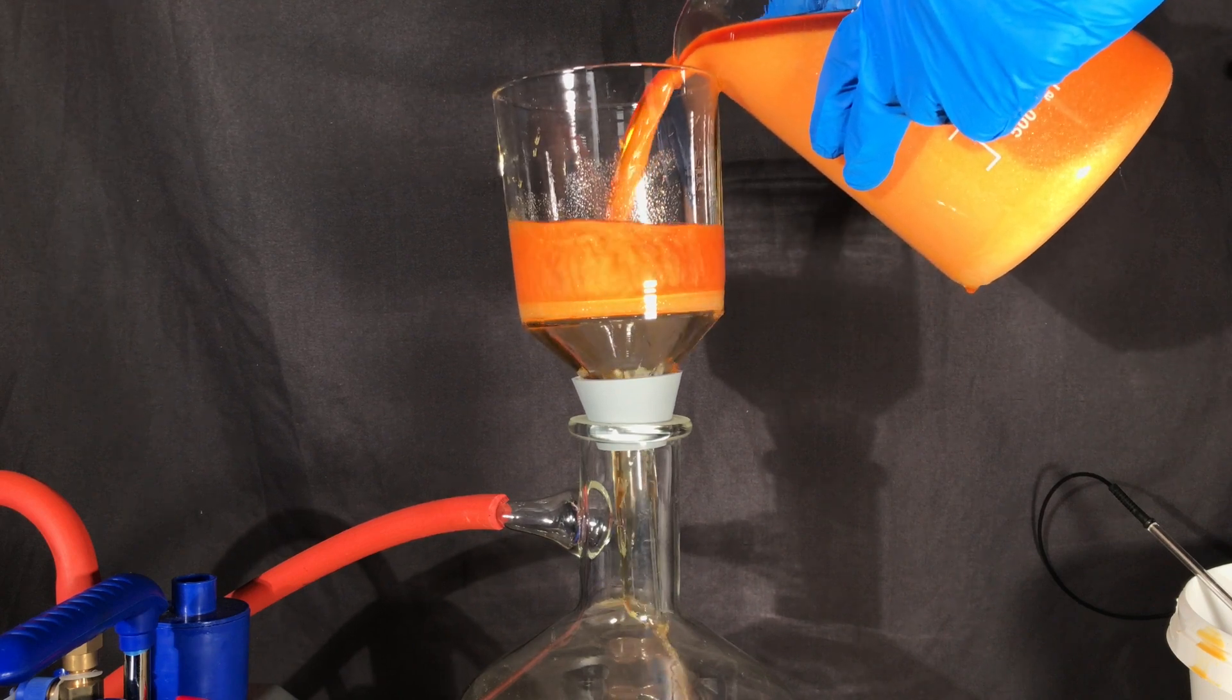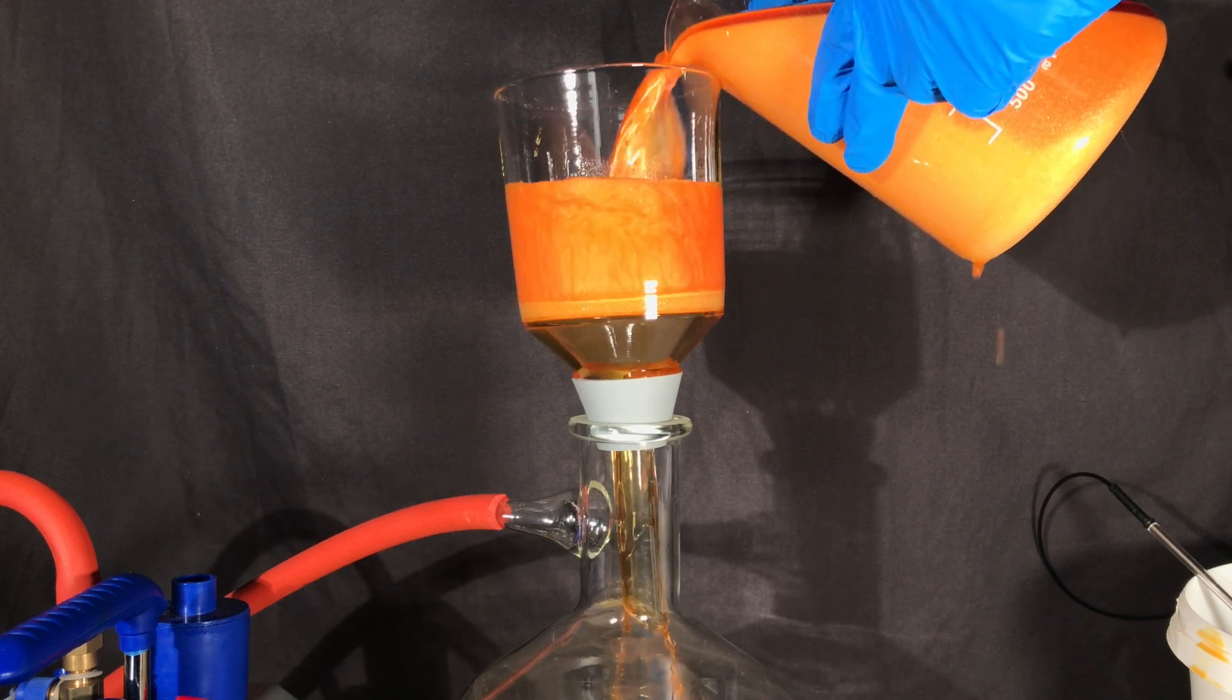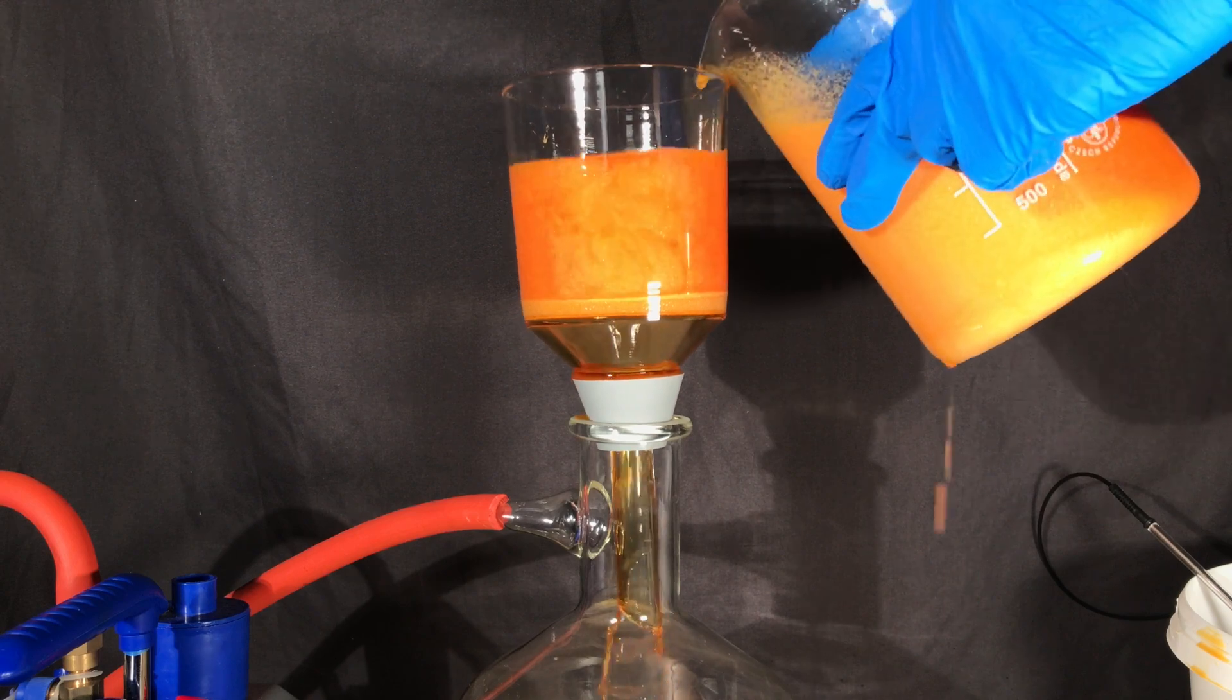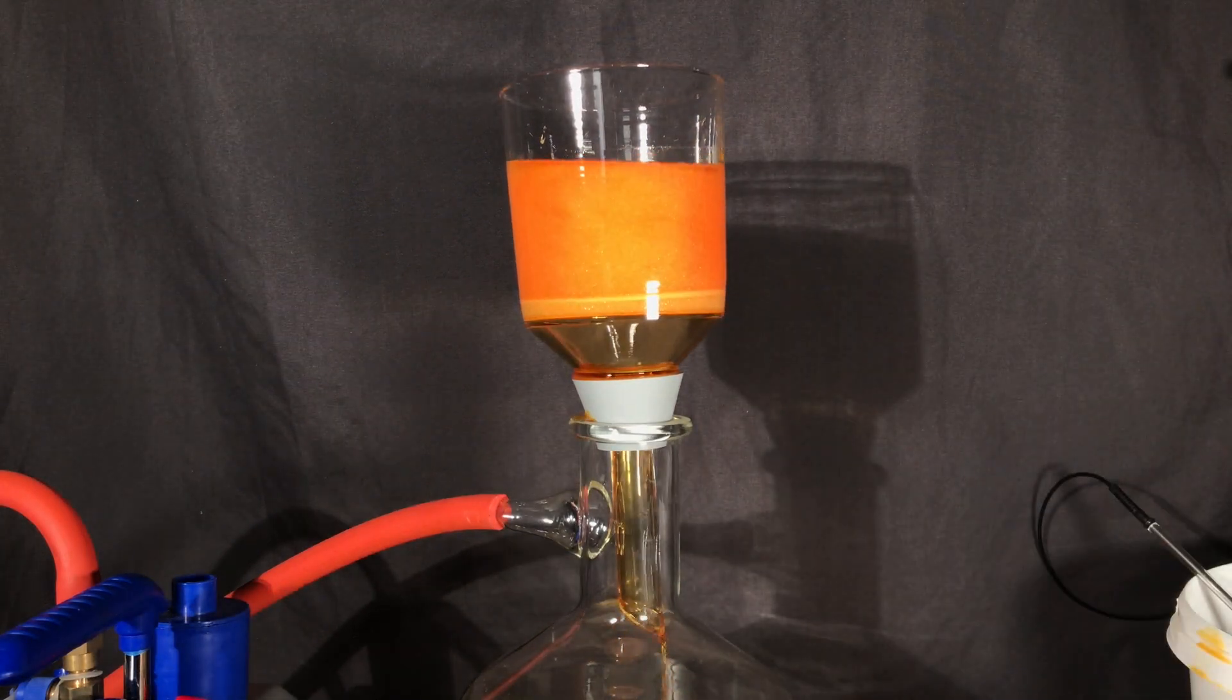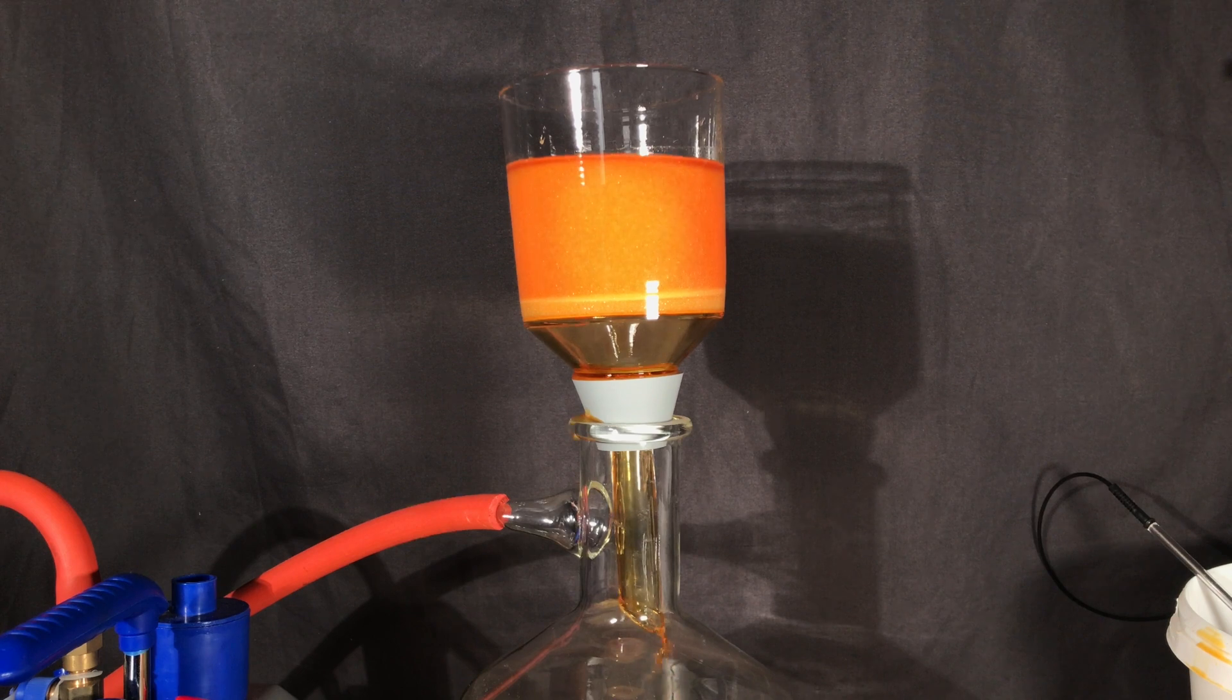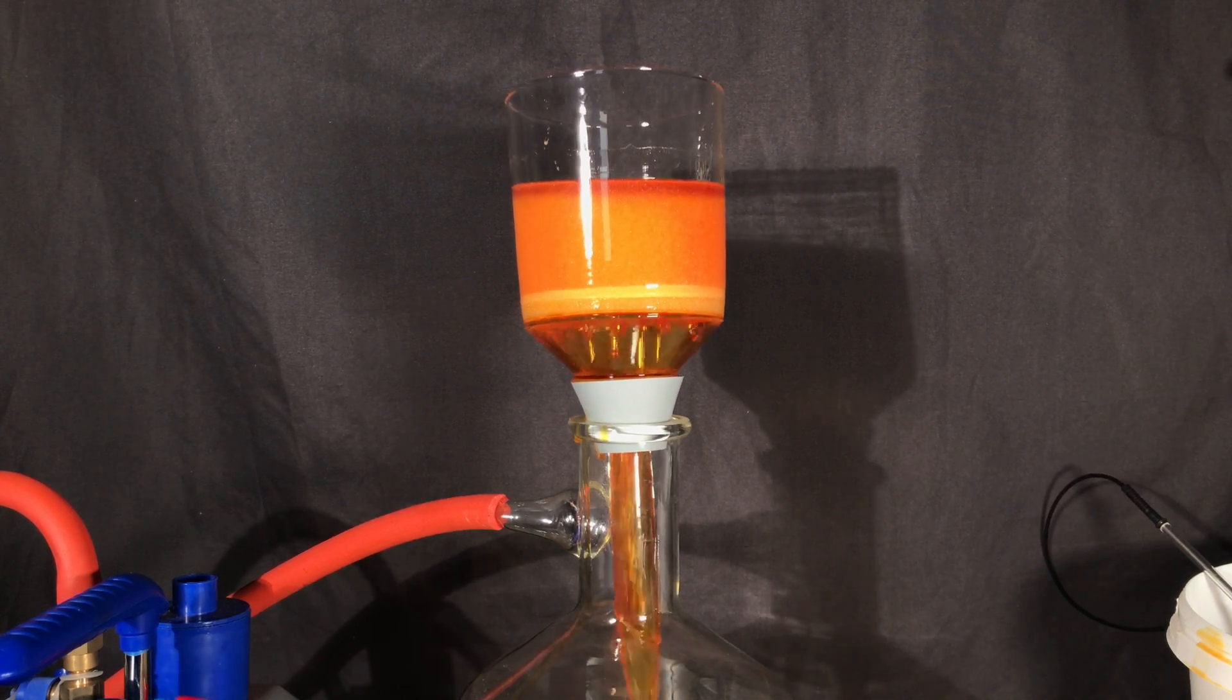I unfortunately spilled some of the solution but we ended up doing a vacuum filtration. By this step we can remove most of the methanol and the methanol still looks orange which indicates that it contains a small amount of leftover bromine.